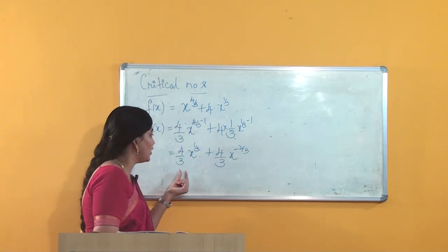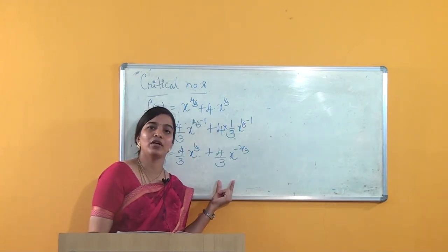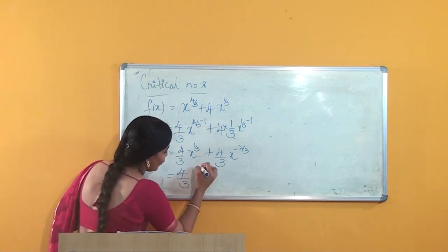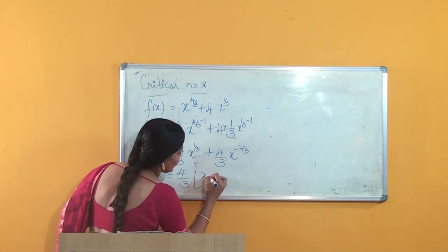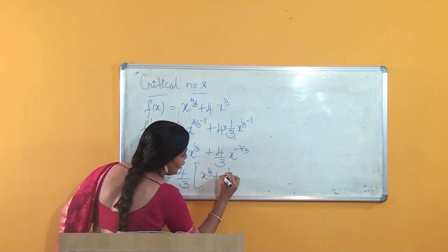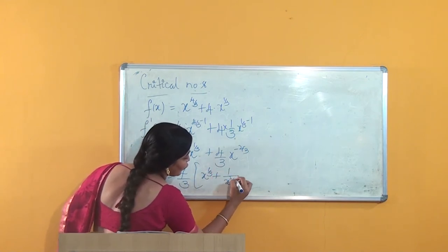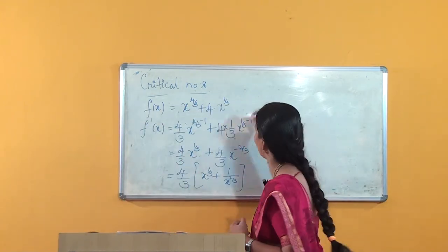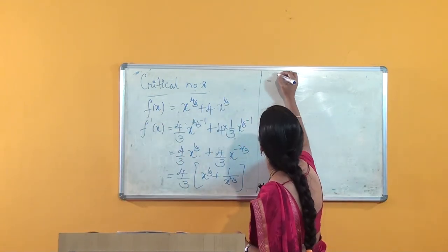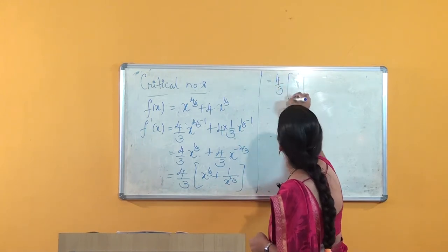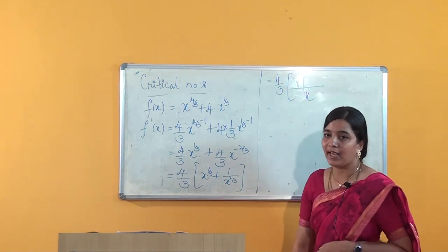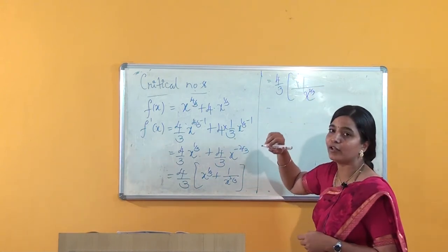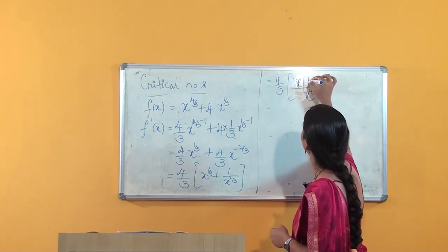You can observe that 4/3 is common in both terms, so we take it outside: (4/3)·[x^(1/3) + 1/x^(2/3)]. Using the LCM method, taking the denominator as x^(2/3), we get the numerator as x + 1. So f'(x) = (4/3)·(x + 1) / x^(2/3).